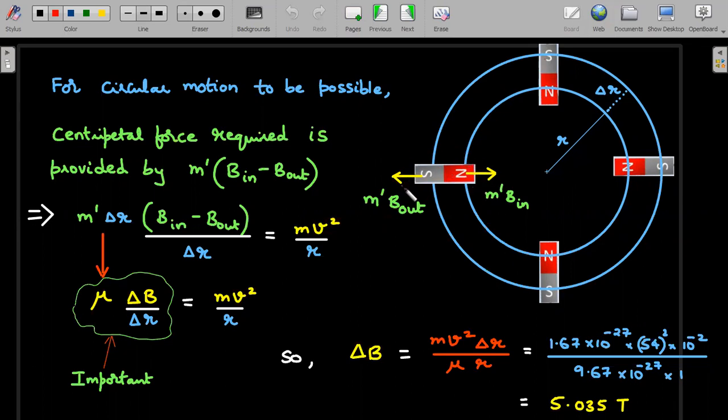So if you draw the free body diagram of one position of that neutron, then on the north pole equivalent of it, there would be an inward force. And then the south pole, I can assume that there is an outward force. And if these two pole strengths, if these two forces are equal, then there won't be any centripetal force. So there is requirement of B in and B out being different.